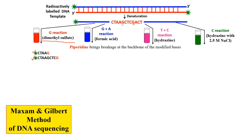In the G+A reaction, where formic acid is added, both guanine and adenine residues are modified, and piperidine breaks at these modified bases. So from the template, wherever we have adenine or guanine, we get a fragment. The first fragment is CTA (cut at A), the second is CTAA (cut at the next A), then CTAAG (cut at G), and so on according to the guanine and adenine positions.